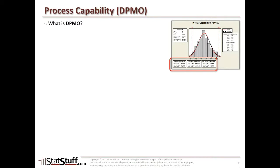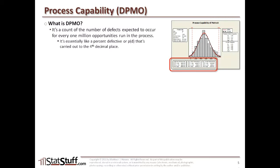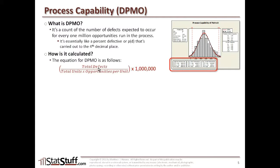Now let's talk about defects per million opportunities, or DPMO, and how you can calculate it. DPMO refers to the count of defects that could be expected to occur for every one million opportunities that run through the process. It's essentially like a percent defective carried out to the fourth decimal place. The equation is: total number of defects divided by the total number of units times the opportunities per unit — this gives a percentage — then multiplied by one million to get the number of defects per million opportunities.